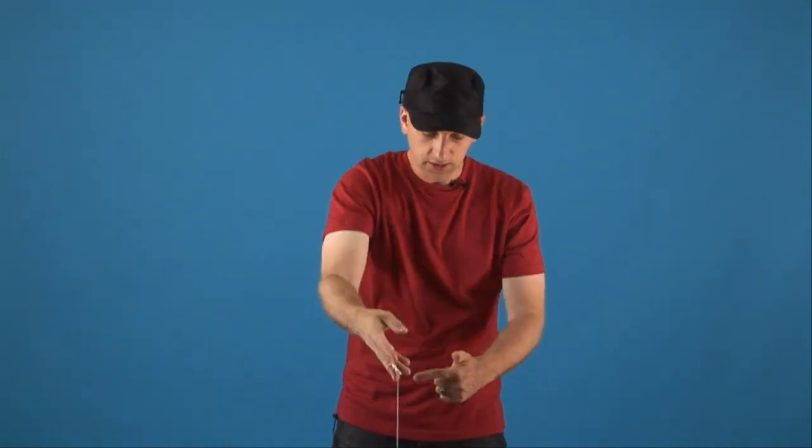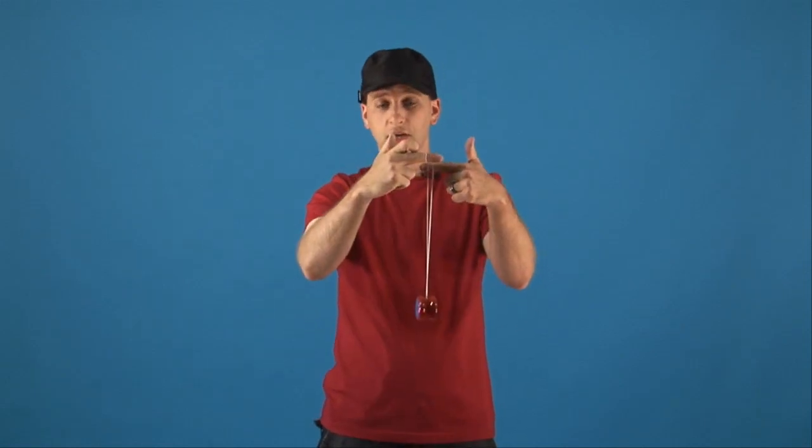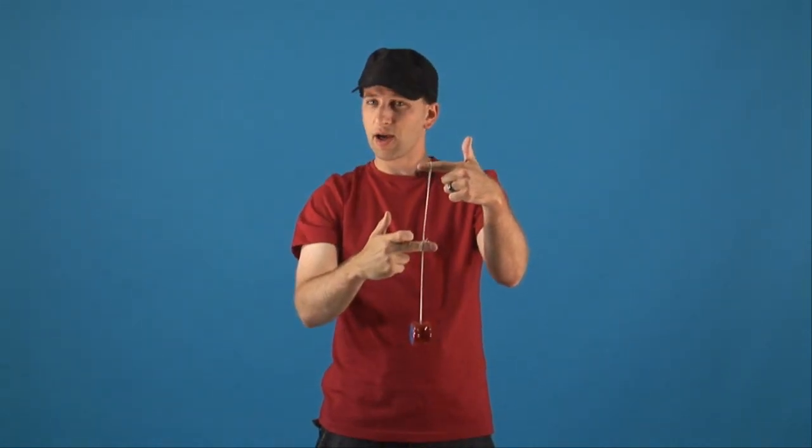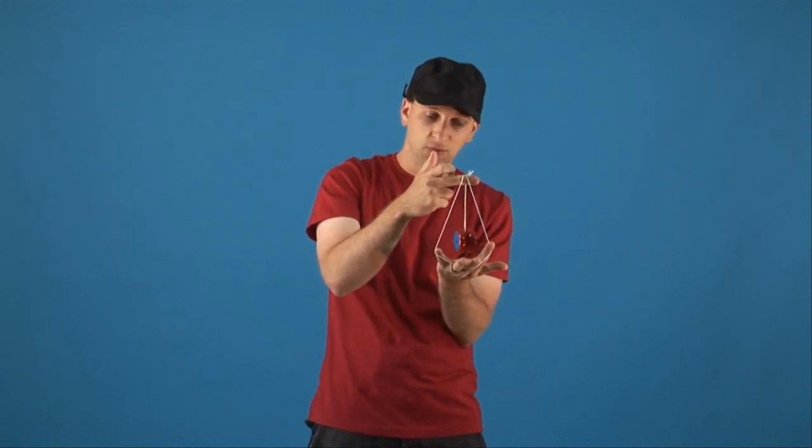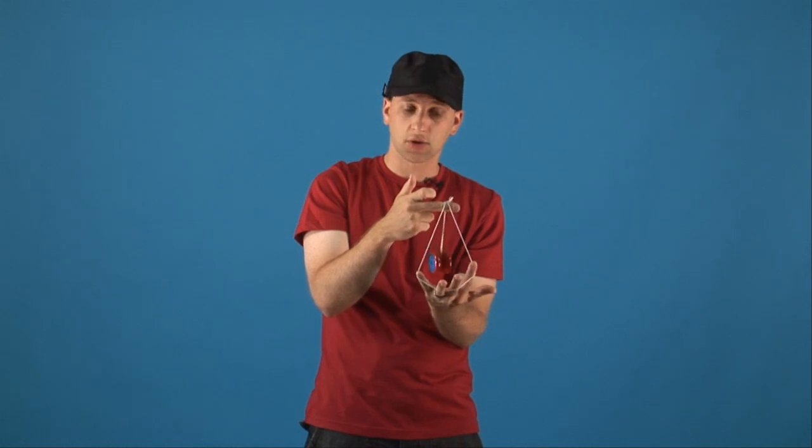So to do this trick, obviously the first thing you have to do is get into your front mount and then you're going to take your yo-yo hand, just go about halfway down the string and then take your opposite hand and stick the rest of your fingers into the string and put that hand right underneath the yo-yo and just rock the yo-yo through a couple of times.